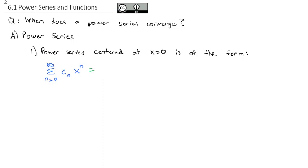In other words, if I wrote it out, it's basically a polynomial: the first constant plus another constant times x plus another constant times x squared plus another constant times x cubed, and so on.